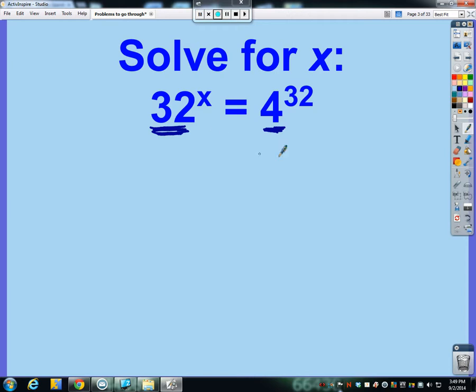So we have to rewrite these two numbers in terms of the same base. So the first thing I would try to do is see could I rewrite 32 as 4 to some power and then have that to the x. Well there is no such whole number that 4 to that would give me 32. So it's not quite going to work out.